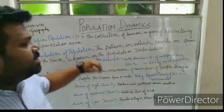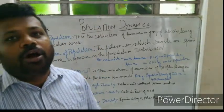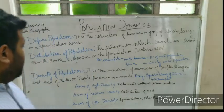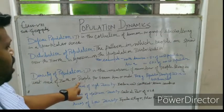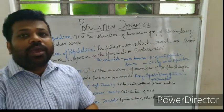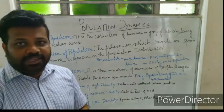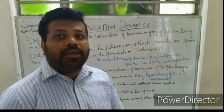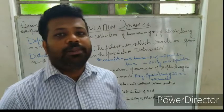To understand population distribution better, we need to know about population density. Population density is the measure of the number of people living in a unit area — people per square kilometer. For example, the population density of India is 464 per square kilometer, meaning if you go one square kilometer, you will find 464 people.